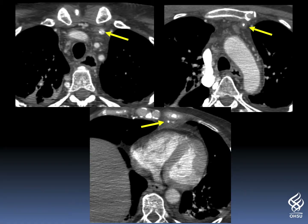We happen to have a CT on that patient. This catheter ended up being in an anterior left parasternal vein — specifically, the internal mammary vein on the left. Depending on what purpose this catheter serves, it can be left there, but it certainly is intravenous.